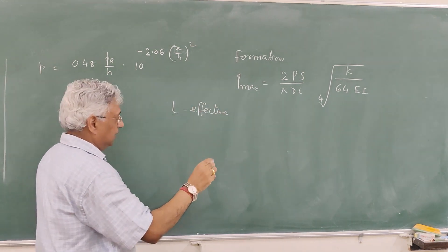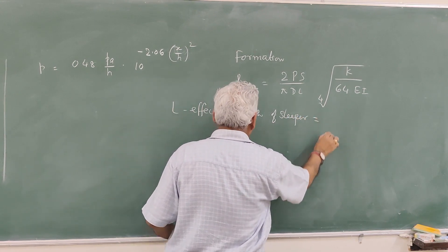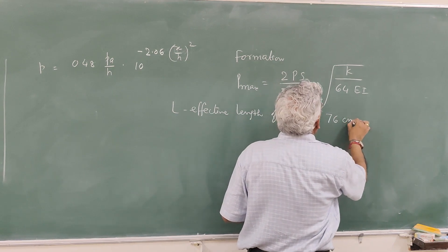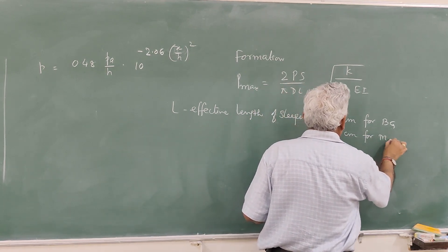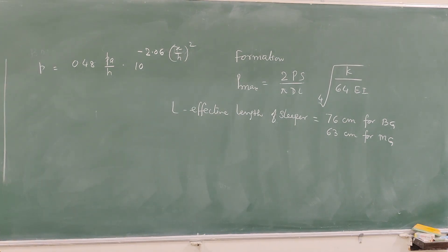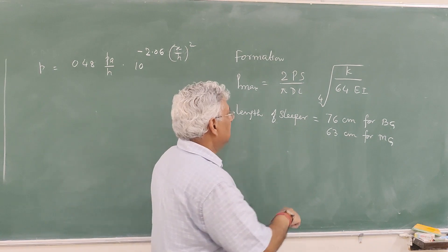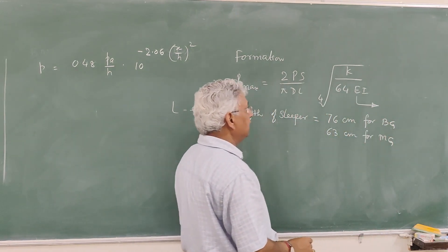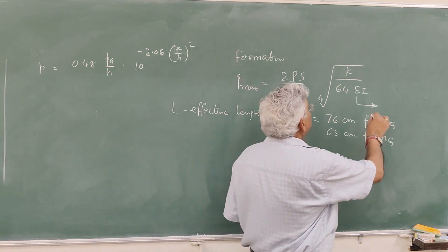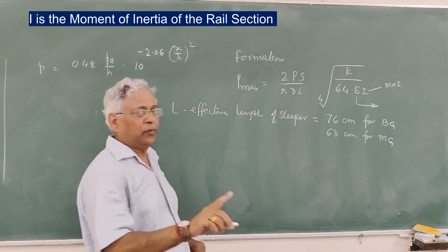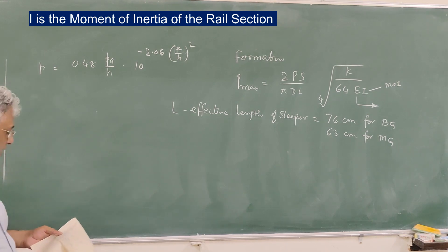The effective width L is used because the entire length is not mobilized. It is 76 cm for broad gauge and 63 cm for meter gauge. K is the track modulus as discussed in earlier sessions. E is the modulus of elasticity of the rail, which is generally 2×10⁶ to 3×10⁶ kg per cm². I is the moment of inertia of the rail section, which depends upon the rail section. That is the maximum pressure coming on the formation.